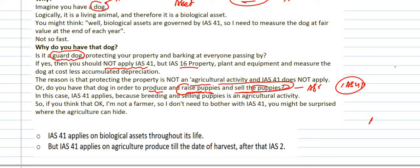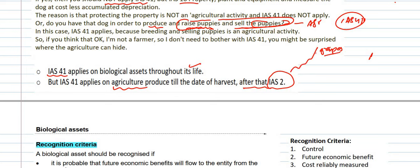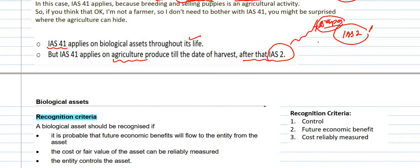IAS 41 applies to a biological asset throughout its life. However, once agricultural produce has been harvested, it should no longer be treated under IAS 41. For example, grapes still attached to the vine are agricultural produce under IAS 41. Once detached, they become inventory and are treated under IAS 2.